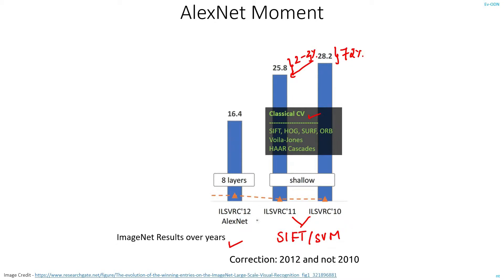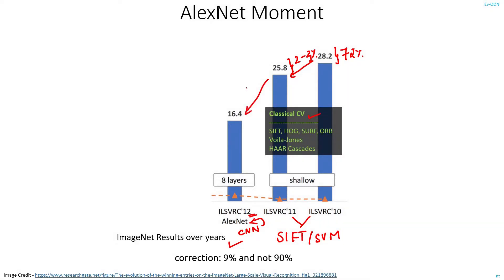All this changed when a team from University of Toronto won the competition using a CNN-based architecture called AlexNet. The error rate dropped by almost 10% compared to the winning model in the previous year, and this is what got the industry excited about machine learning. Hence, this movement is called the AlexNet movement.